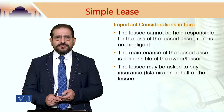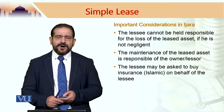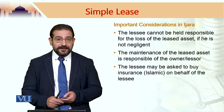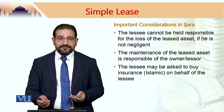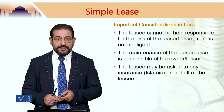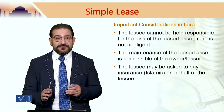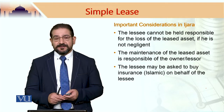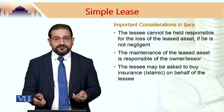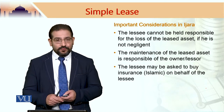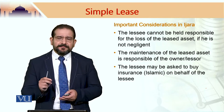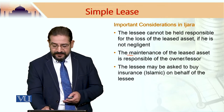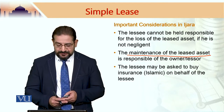There are certain important considerations in IJARA. Number one, the Lessee cannot be held responsible for the loss of the asset when the Lessee is not negligent. If a house has been leased out to someone and after some time, because of some calamity or something that happens which is not because of the Lessee, the Lessee would not be held responsible for this loss. This loss would be borne by the owner of the leased asset, who is the Lessor. Because the Lessor is the owner of the asset, it is important that the maintenance of the leased asset is the responsibility of the owner.